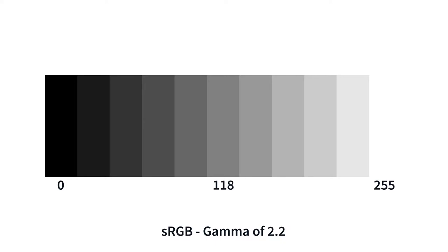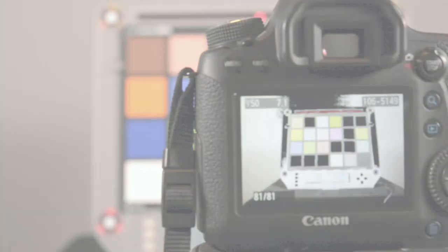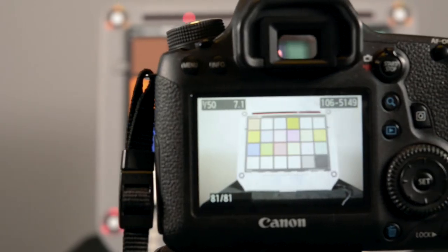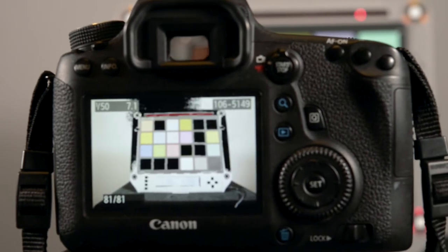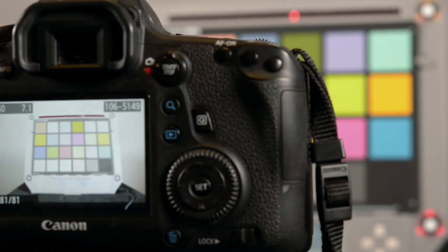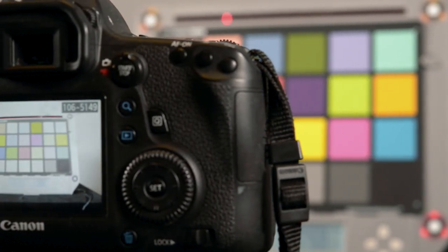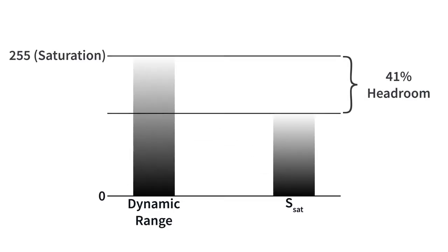Sensitivity is calculated from light intensity and exposure time, and is defined by units of 1 over lux seconds. Saturation-based ISO sensitivity measures the sensitivity relative to the luminance level that saturates the sensor or imaging system. When saturation occurs, pixels lose their ability to store additional charge and information in brighter areas is lost. Saturation-based sensitivity is determined with a 41.4% headroom to prevent the imaging system from clipping.